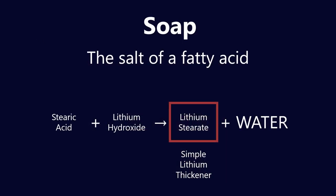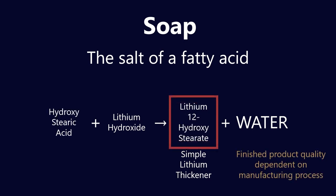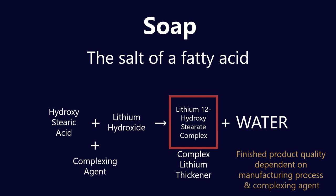First of all, if we go back to our definition of what a soap is, when we try to make a complex grease, we're introducing another step. Rather than just stearic acid with lithium hydroxide, we're going to introduce a complexing agent. This means that the finished product quality is dependent both on the manufacturing process and on the actual complexing agent that's used. There are an array of different complexing agents that can be used.